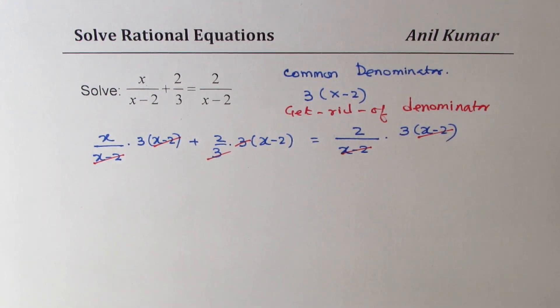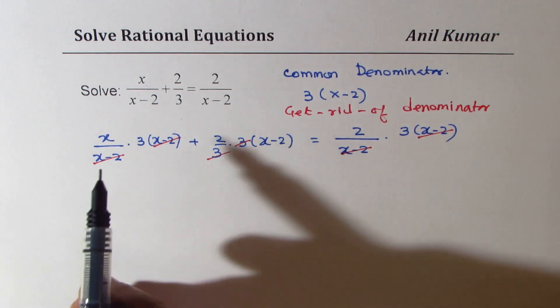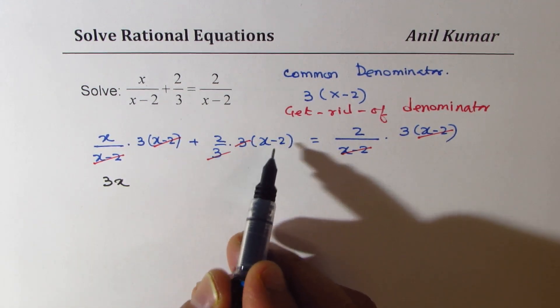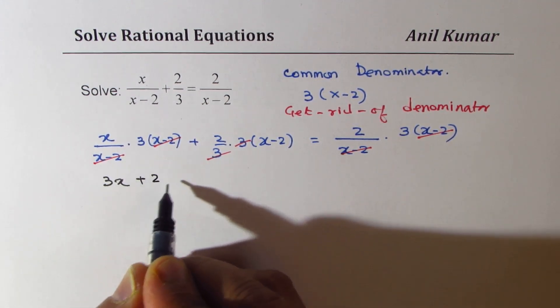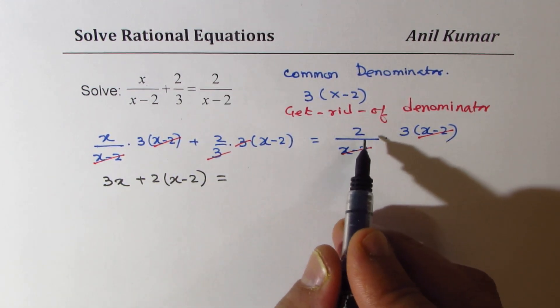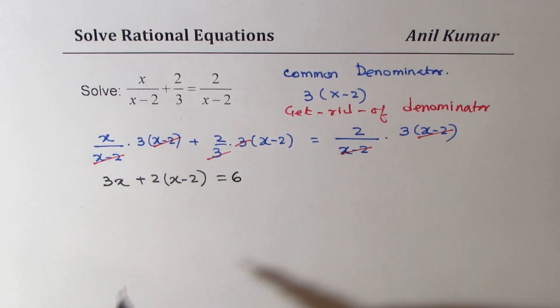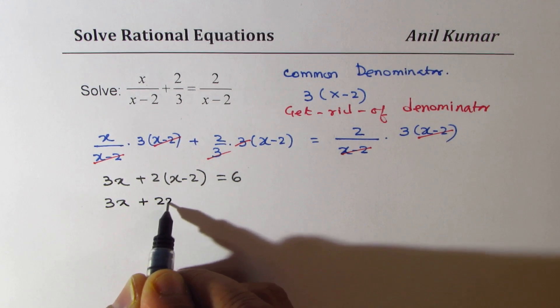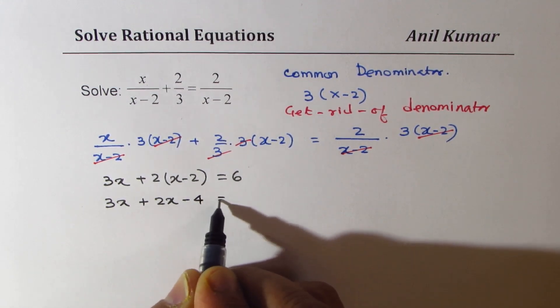So this step involves get rid of denominator. So we have a linear equation that is much simpler to solve. So 3 times x is 3x. Then we have 2 times x minus 2. Let me rewrite this. 2 times x minus 2 equals to 2 times 3, which is 6. So that is a linear equation. 3x plus 2x minus 4 equals to 6.